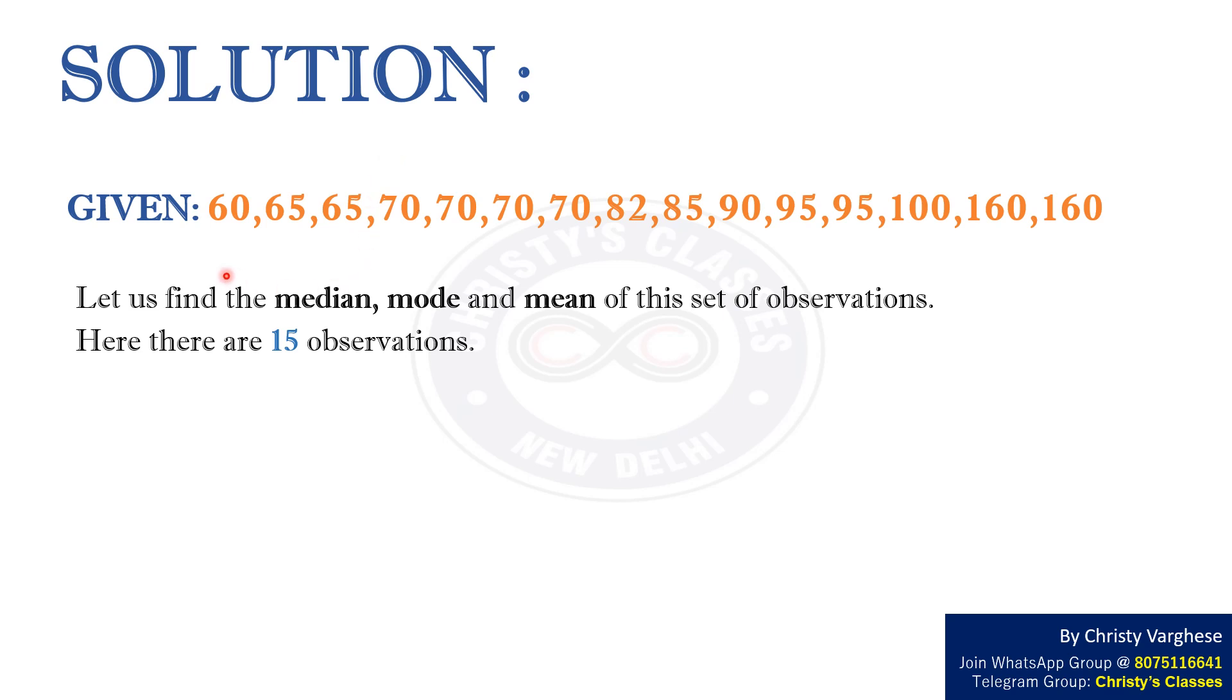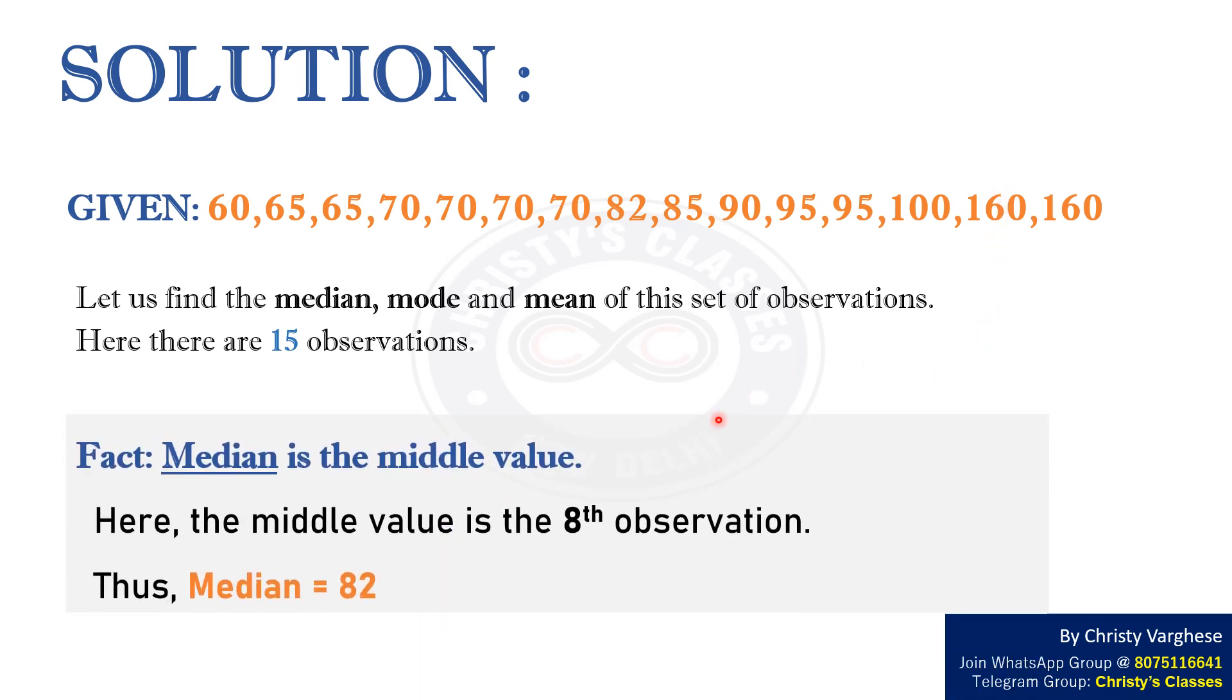Solution: We are given a set of 15 observations. Let us find its mean, median and mode. We know that median of a set is its middle value when arranged in either ascending or descending order. The given set is already in ascending order. Here, the middle value is the 8th observation, which is 82. Thus, median equals 82.